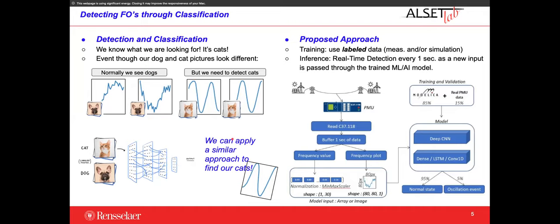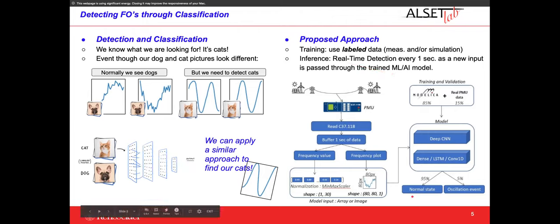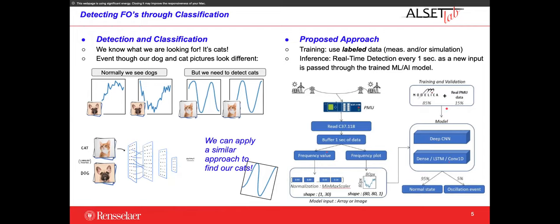We apply a similar approach to find oscillations — those are our cats. We train using labeled data, either from measurements or simulations, and the inference is done in real time at the edge from the PMU data. We stream that data, pass it to the neural network, it detects. The training is based on models or simulation.